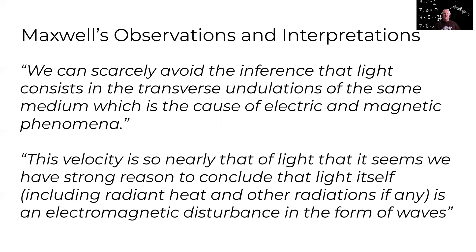And also this velocity is so nearly that of light that it seems we have strong reason to conclude that light itself including radiant heat and other radiations if any is an electromagnetic disturbance in the form of waves. So as we'll show shortly Maxwell predicted that the speed of electromagnetic waves was the speed of light. Or more to the point he calculated their speed and he found that the speed was almost identical to the speed of light that has already been measured. So he was therefore inferring that or interpreting this data that light itself is actually made of electromagnetic waves.